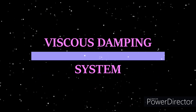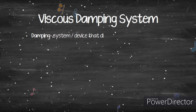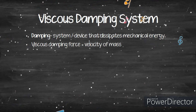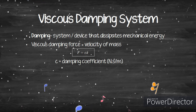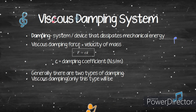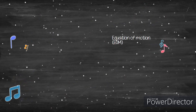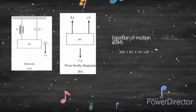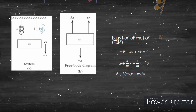The last subtopic is the viscous damping system. A damping device dissipates mechanical energy with force proportional to velocity: F = cẋ, where c is the damping coefficient. There are two types of damping: viscous damping and Coulomb damping due to surface friction. The equation of motion for a viscous damping system differs from the undamped case because it includes the value c, the damper in the system.